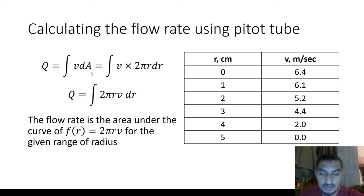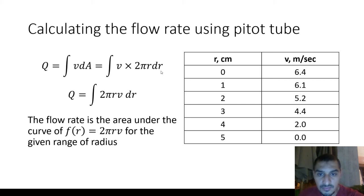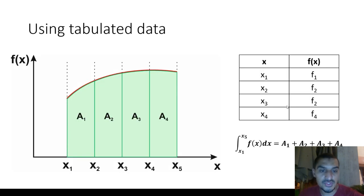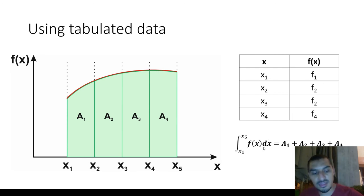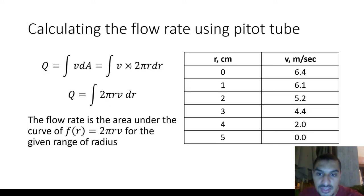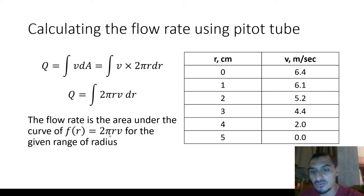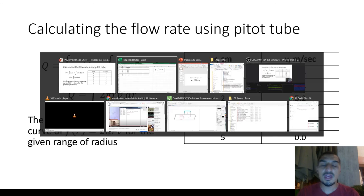The flow rate equals the integral of V dA, and dA = 2πr dr, since the area element of a circle is 2πr dr. So the integral becomes Q = ∫ 2πr·v dr. Rearranging, we identify f(r) = 2πr·v, keeping the form f(r) dr. This is how we'll do our calculations. Now let's go to Microsoft Excel to see how we use the data to calculate the flow rate.